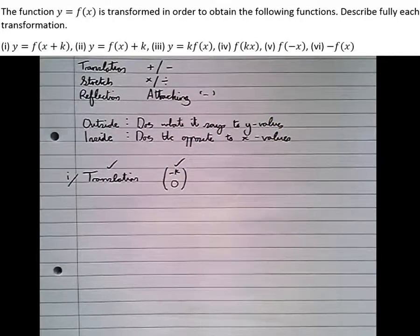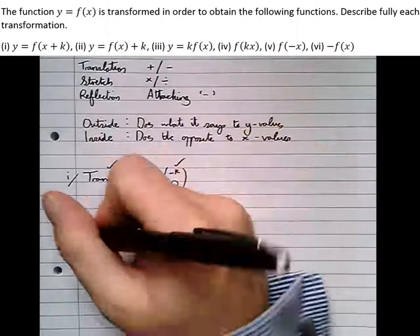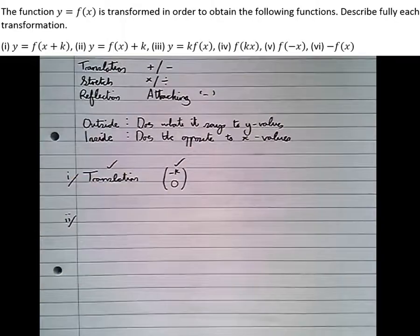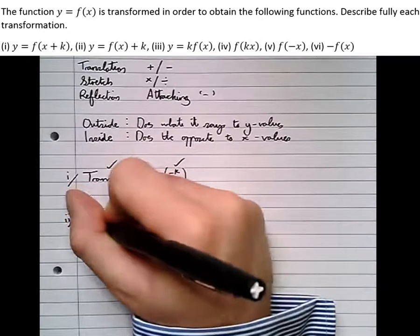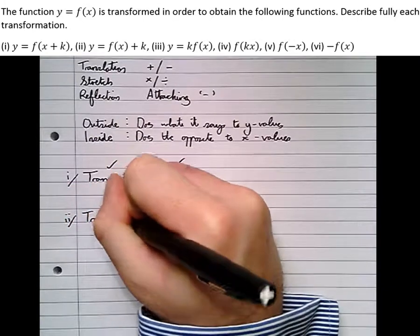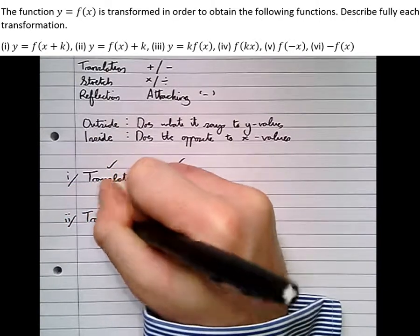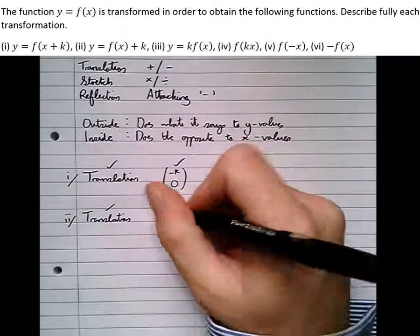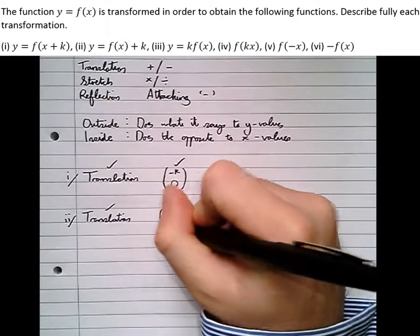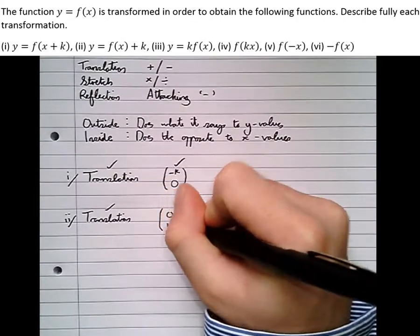That gives your second mark. Part two: f(x) + k. Again, we've added something so it's a translation — one mark. This time k has been added outside of the bracket, so it does what it says to the Y value: it adds k to all the Y values. Another mark.